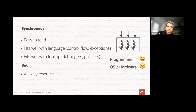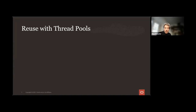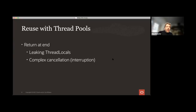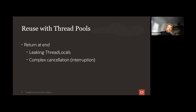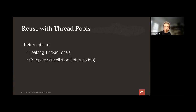Since threads are expensive and we can't have too many of them, we do not make optimal use of hardware resources. When we have a costly resource, we share, recycle, and reuse it. The first thing we can do is use a pool of threads: instead of spawning a new thread for every incoming request, we borrow a thread from a pool, use it to run the request, and return it to the pool. In Java this is done using executors — we submit the task, it borrows a thread, executes start to finish, and returns the thread to the pool.